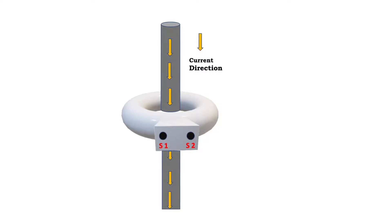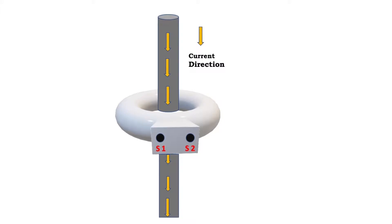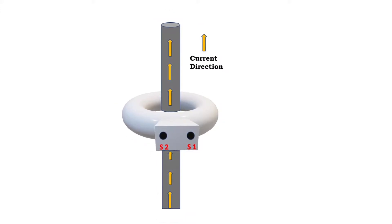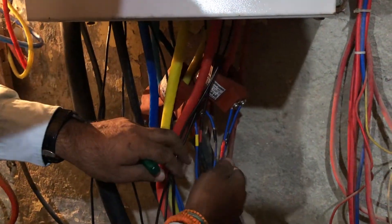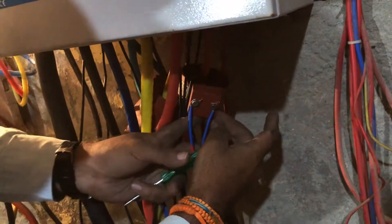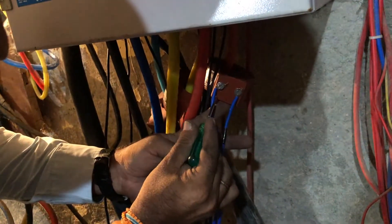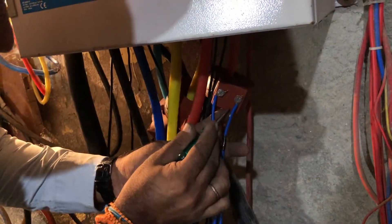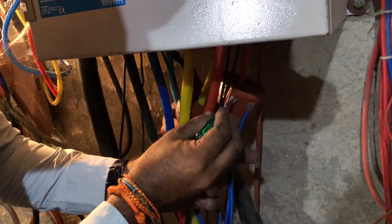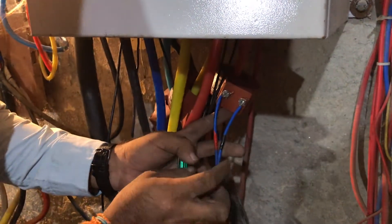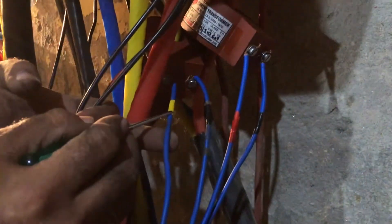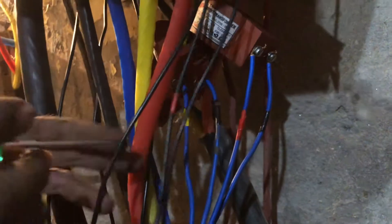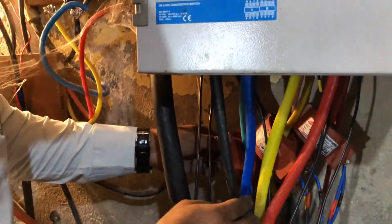We will do the CT connections accordingly. S1 comes to the left when the current direction is down, and when the current direction is up, S2 comes to the left. Now we'll make the connections onto the ACDB. For each RCT, S2 is connected to the neutral and S1 is connected to the line voltage. The CT direction can be determined by the right-hand thumb rule. We replicate this strategy for all other CTs: for Y phase, S1 to line and S2 to neutral; for B phase, S1 to line and S2 to neutral.